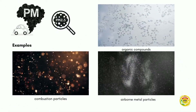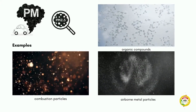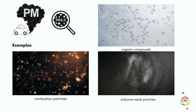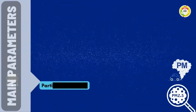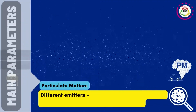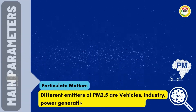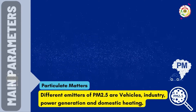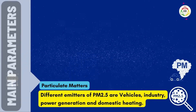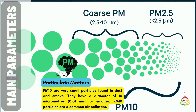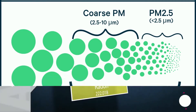Examples of PM2.5 are combustion particles, organic compounds, and airborne metal particles. Different emitters of PM2.5 are vehicles, industry, power generation, and domestic heating. PM10 are very small particles found in dust and smoke, with a diameter of 10 micrometers (0.01 mm) or smaller, and are a common air pollutant.